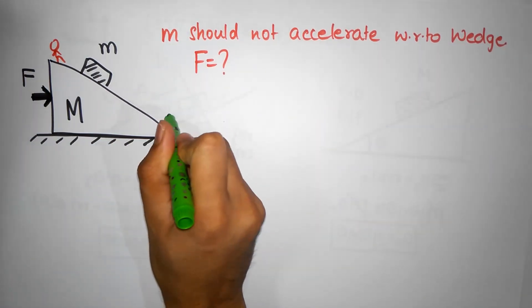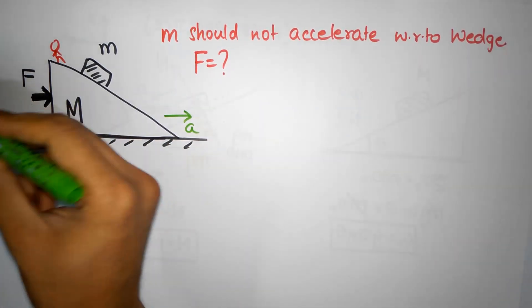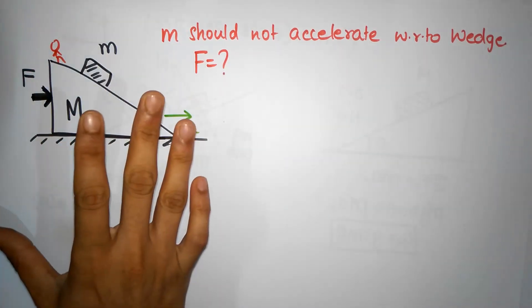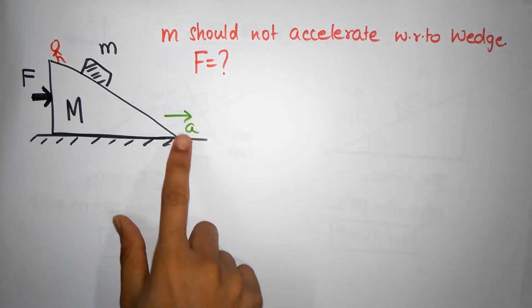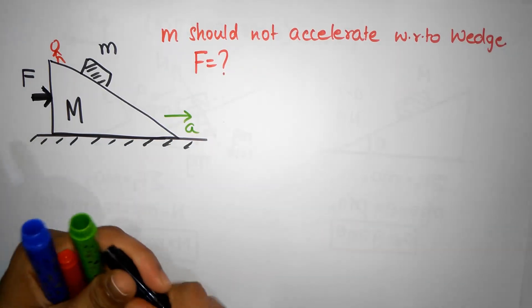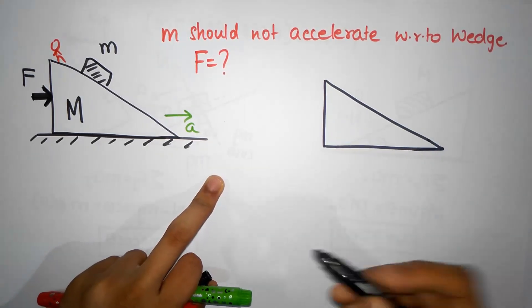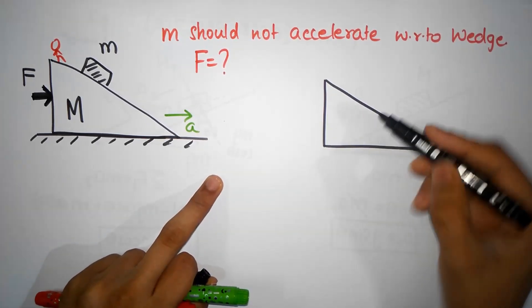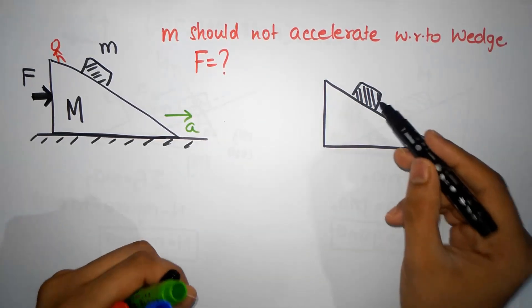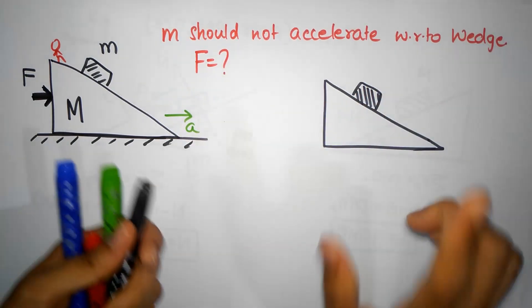From the non-inertial reference frame point of view, this block experiences an additional gravity. In any non-inertial reference frame you get a fake gravity in the opposite direction of the acceleration. Let me draw the wedge reference frame - the wedge is at rest.